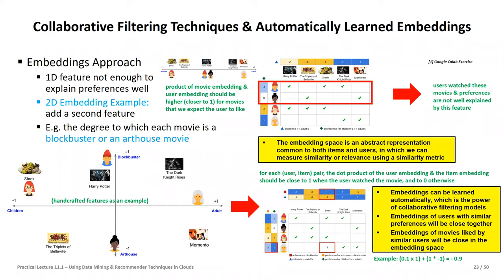When you have a 200-dimensional vector explaining a personality — which might actually be true given how complex we are — you pay the price in computing. And that's just the user space. The movie space is also very elaborate: a movie could easily need 10D, 20D, or more to explain all its differences. Think about historic versus future settings as another dimension, or the lead actor as a very important property.